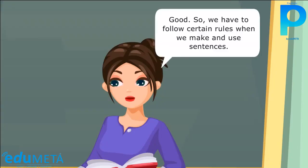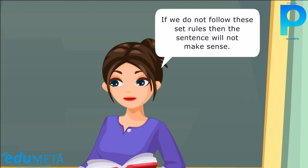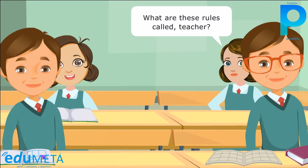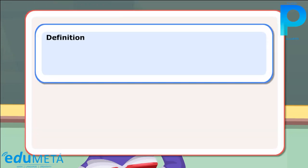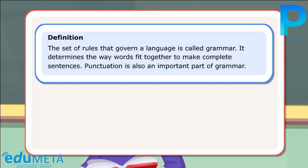So we have to follow certain rules when we make and use sentences. If we do not follow these set rules, then the sentence will not make sense. The set of rules that determine how words are arranged in a sentence in any language is called grammar. The set of rules that govern a language is called grammar. It determines the way words fit together to make complete sentences.